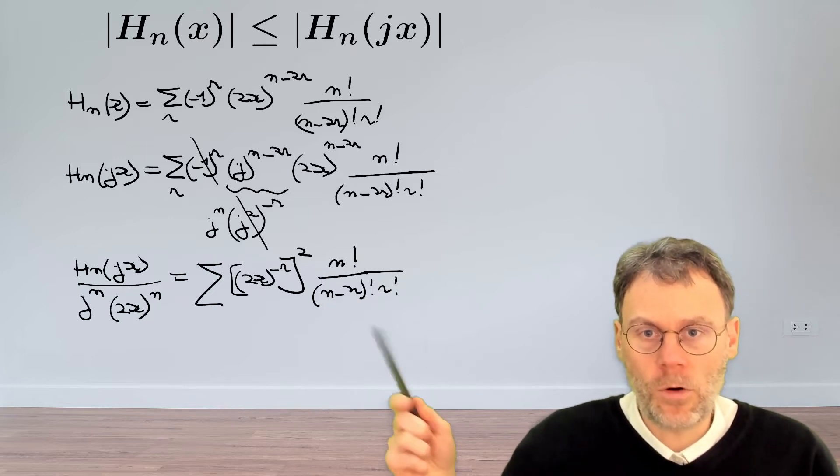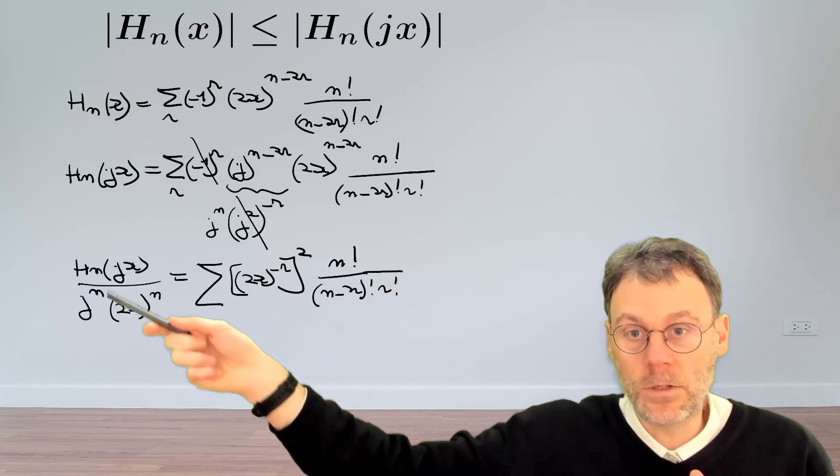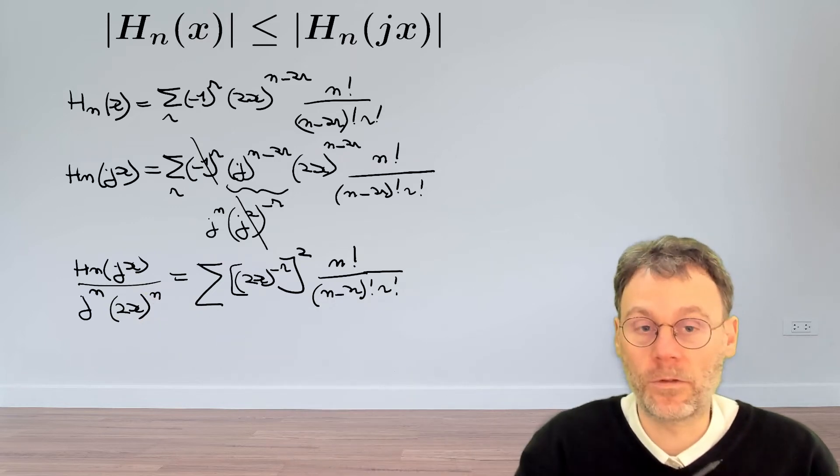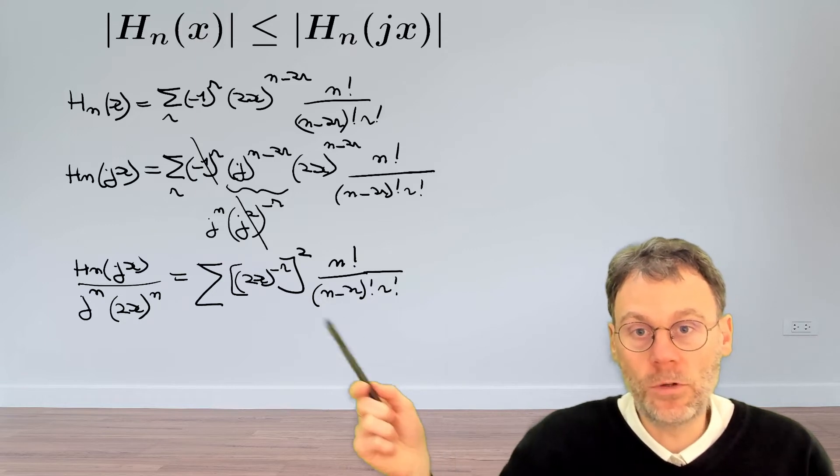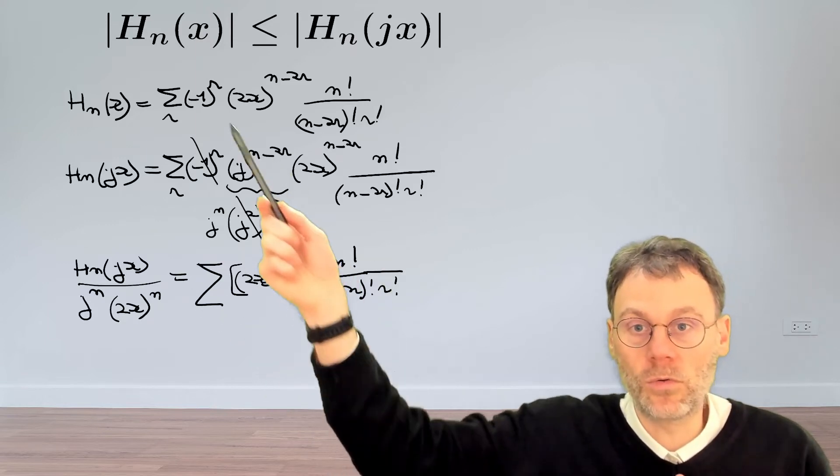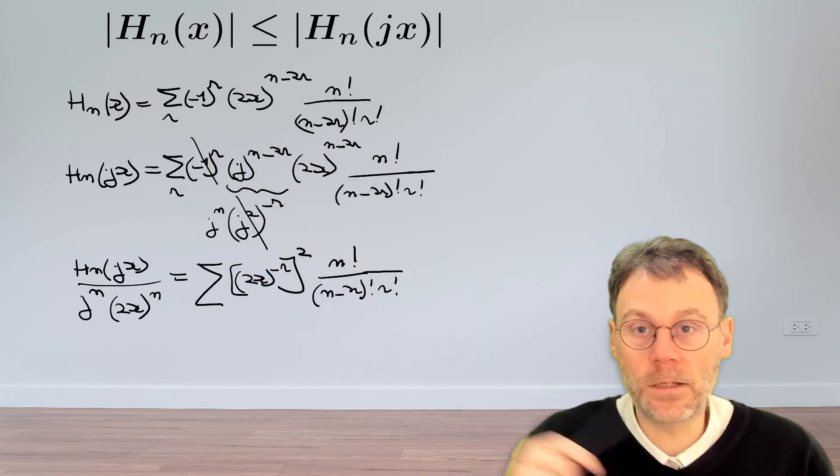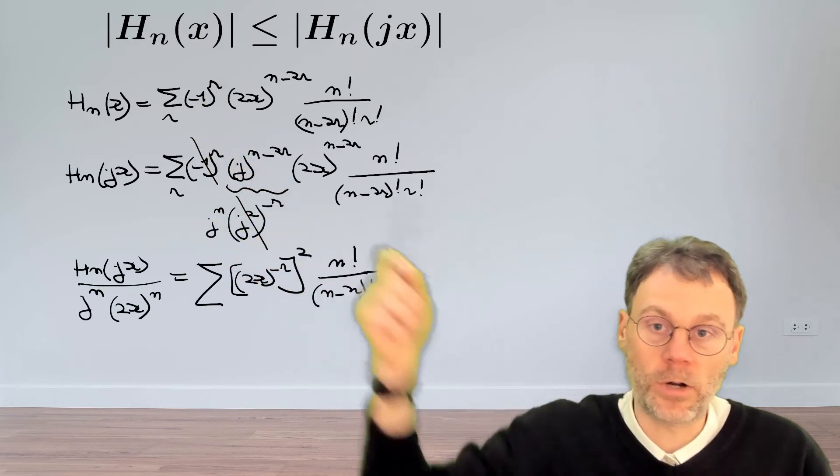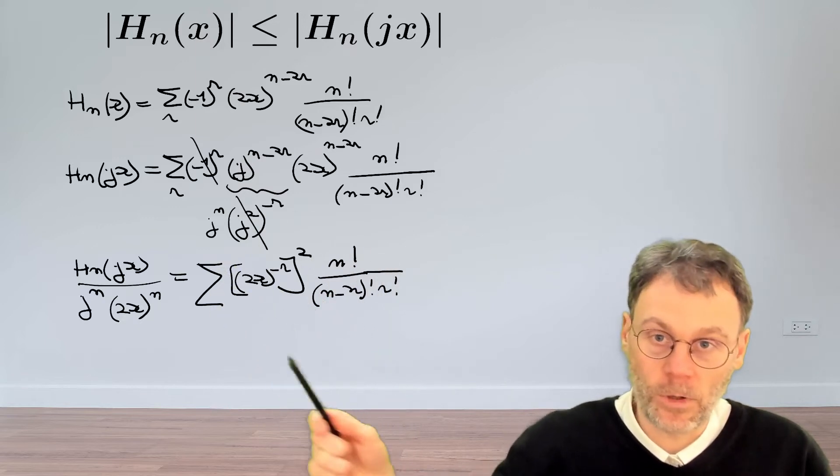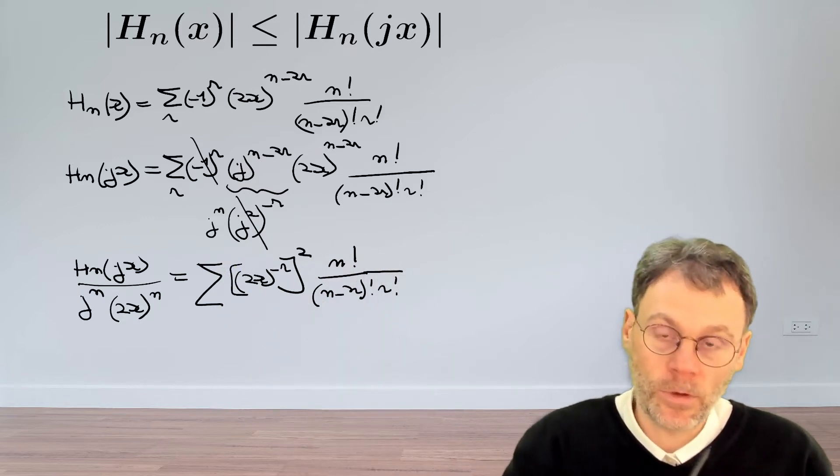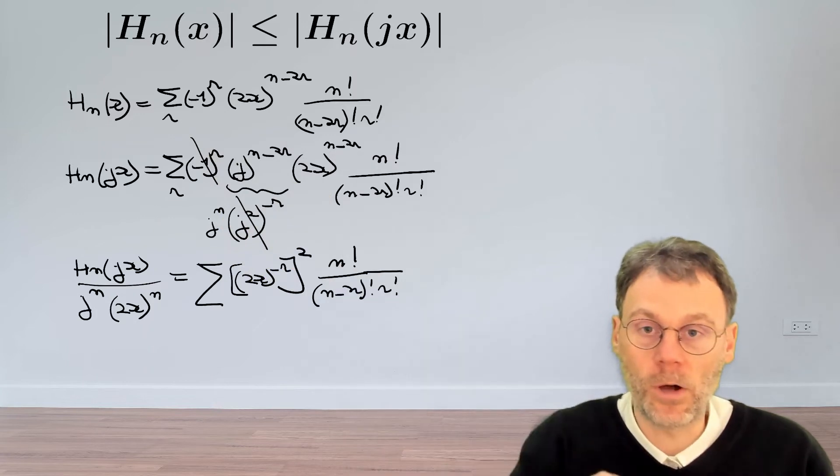Right, so now we have a sum of positive numbers on the right-hand side, which will also mean that this number here on the left-hand side is a positive number. Good, what next? Next up is we need to relate this thing somehow to our original expression for Hn(x), and in order to do that, one of the things that is missing is this minus 1 to the power of r here.